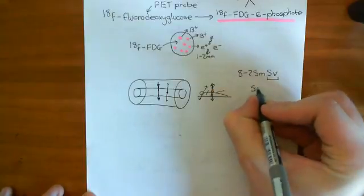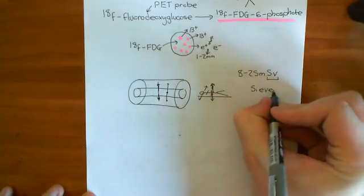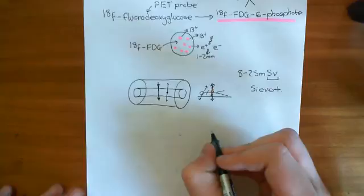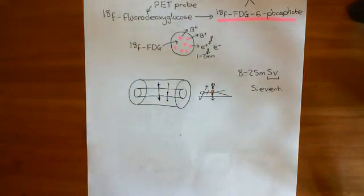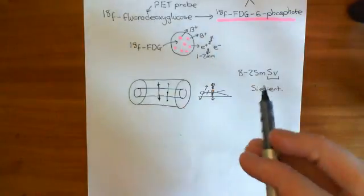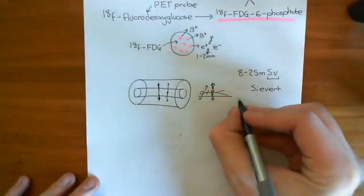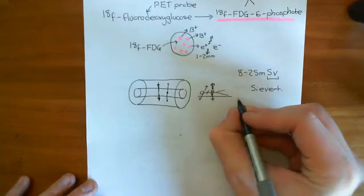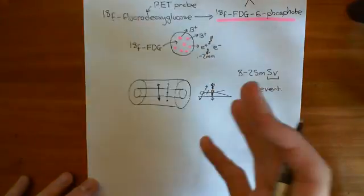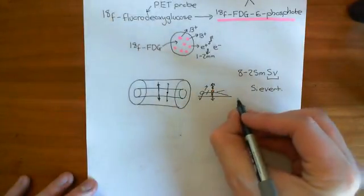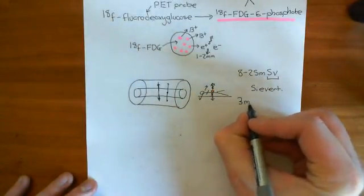A sievert is a unit, it's kind of a dodgy unit. It kind of tells you how damaging that dose of radiation is. But how do you quantify that? How do you actually work that out? I don't know. But the general dose of radiation that we get from just the background radiation every year is about 3 millisieverts.